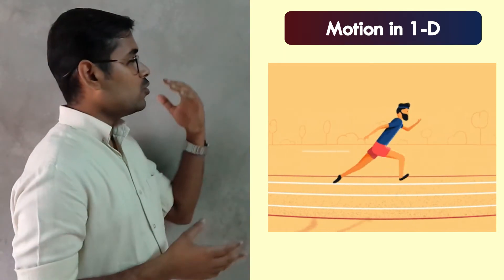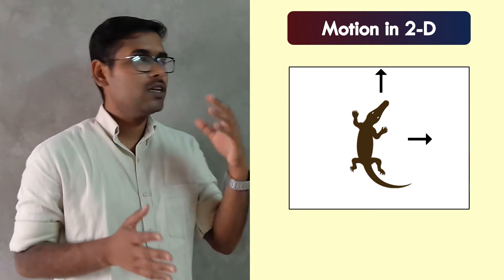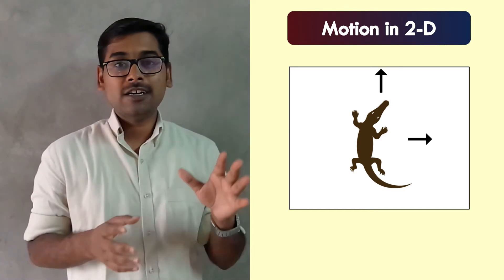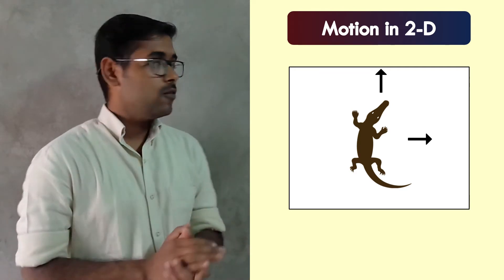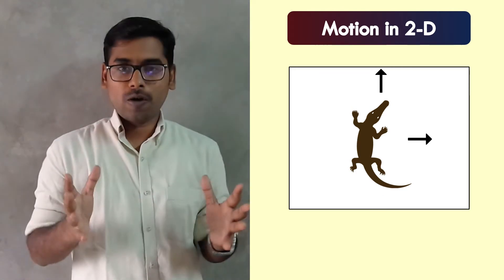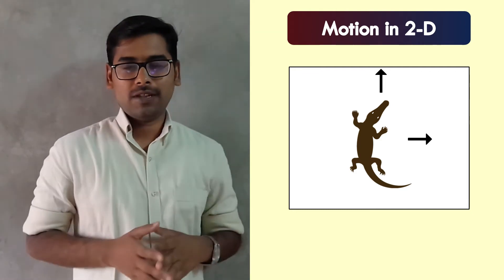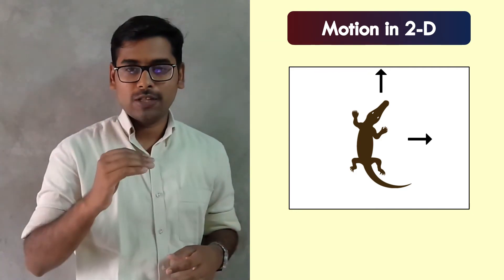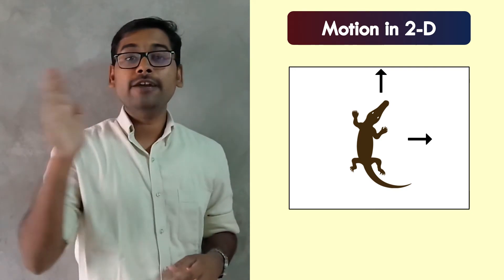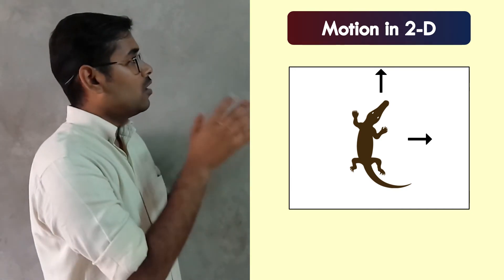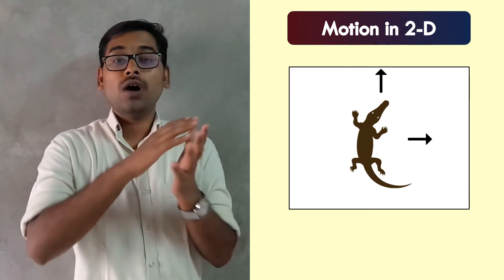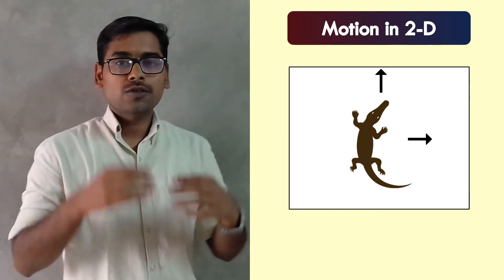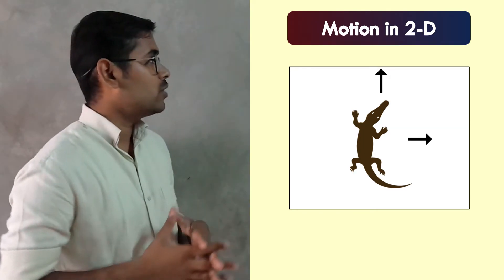Moving to an example of motion in two dimensions, we have a lizard moving on the wall. The lizard has more options compared to the ant — it can move forward and backward on the wall, and it can also move sidewards. So here the motion of an object is restricted to a plane surface — the wall in this case. This is an example of motion in two dimensions.